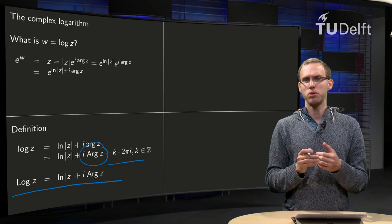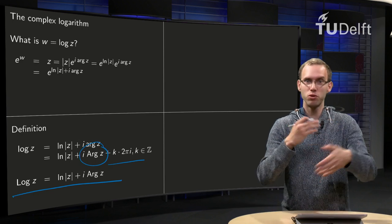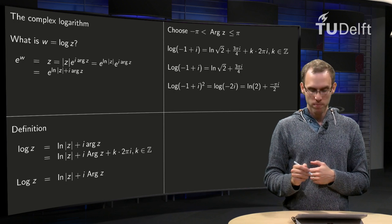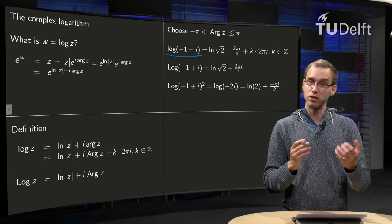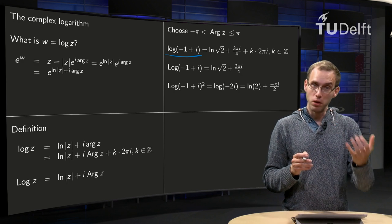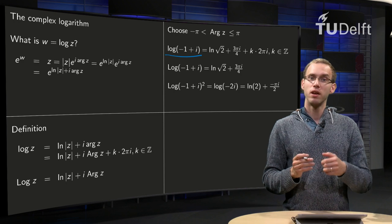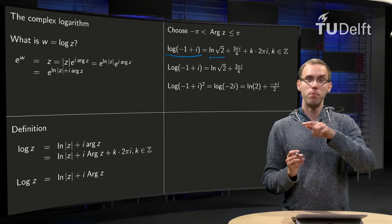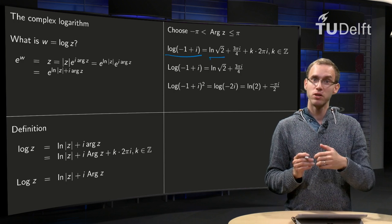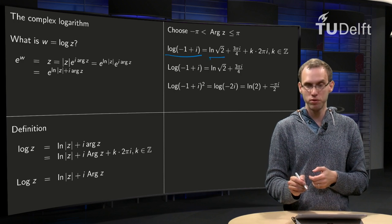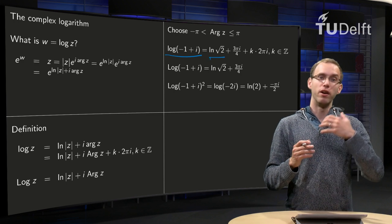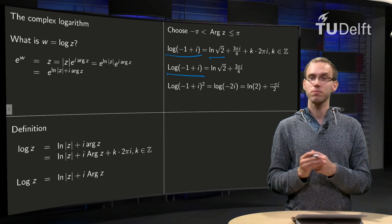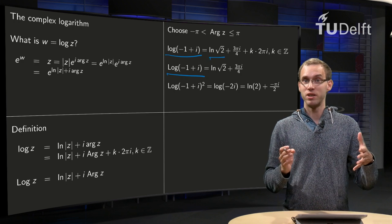Let's try some computations. All seems fine now — just use the capital Log of z and your function becomes one-to-one, all problems solved. Or not? We choose the argument between minus π and π. What happens if we compute the Log of minus one plus i? We need its modulus and its argument. The modulus is easy: (−1)² + 1² = 2, and then the square root, so ln of √2. The argument of minus one plus i is 3π/4, so the small arg is 3π/4 plus any multiple of 2π. For the capital Log of minus one plus i, we plug in k equals zero.